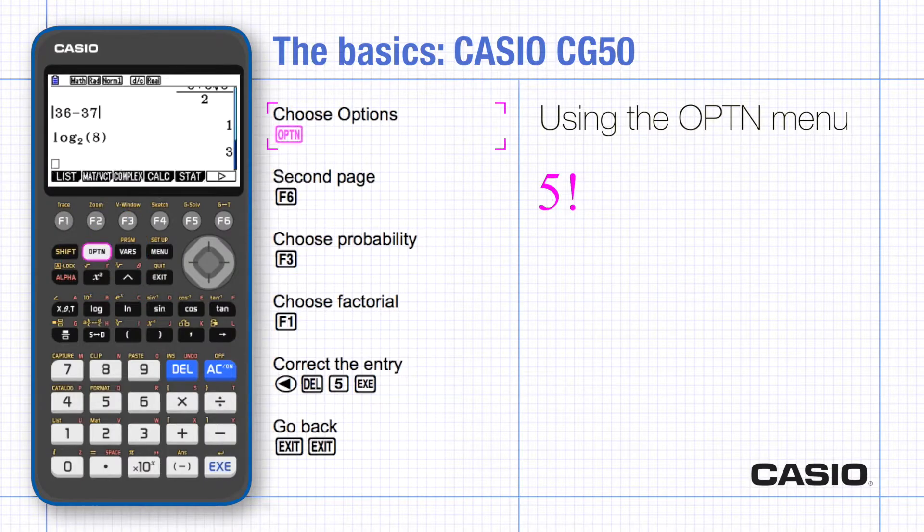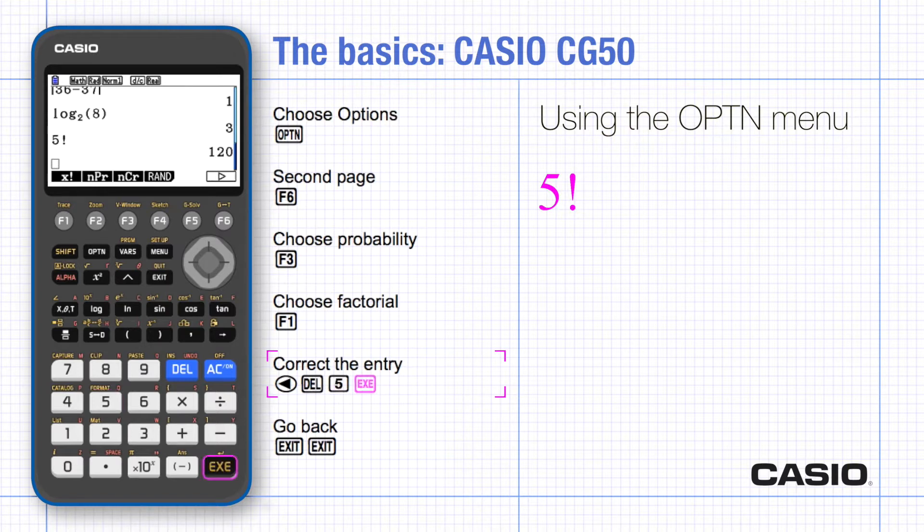The option menu for this goes over two screens. Use the arrow to go across to the second page and choose probability. Choose factorial and the CG50 thinks you want to use the previous answer. So scroll back and delete answer. Put 5 in front of the factorial sign and execute.